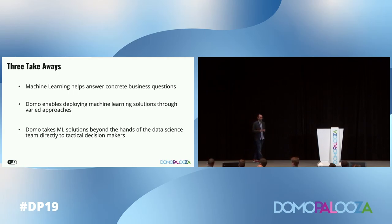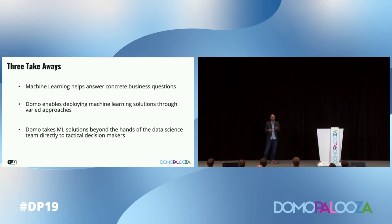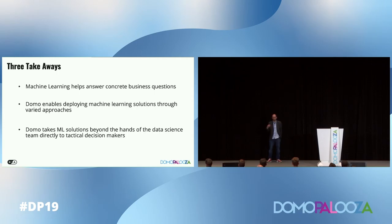The second key point is how Domo helps you enable these processes through different levels of skill and different levels of complexity, so you can get the answers that you want. And finally, showcase how Domo is able to take these machine learning solutions out of the hands of the data science team and bring them to the tactical decision makers.